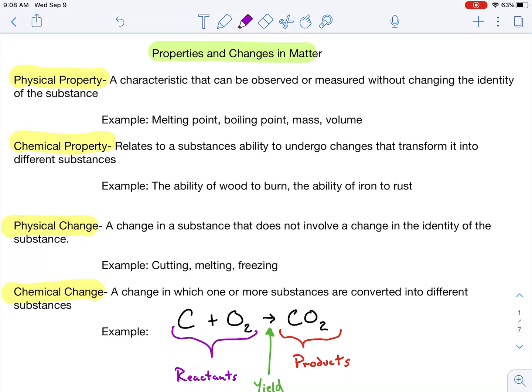Properties and changes in matter. So, we have physical and chemical properties. We also have physical and chemical changes. A physical property and a physical change are somewhat similar. A physical property, a characteristic that can be observed without changing the identity. If I put something on a balance and get its mass, that something does not change.